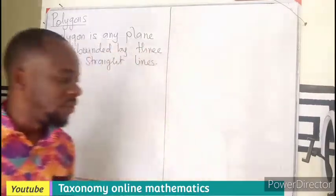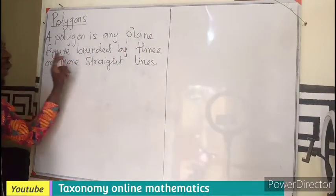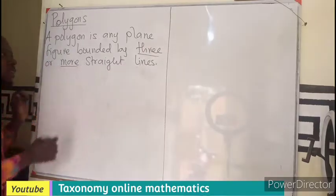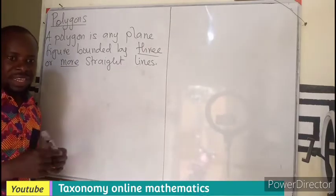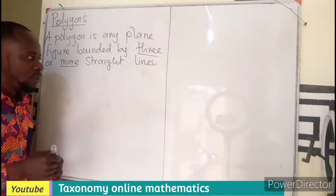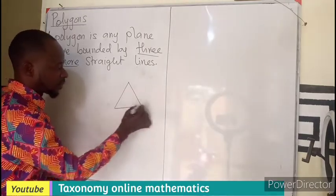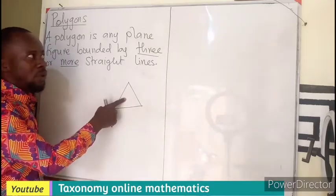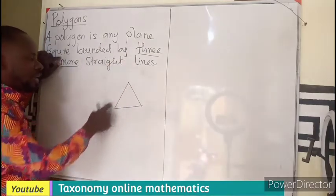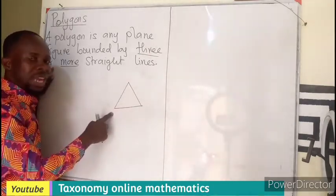Per a brief definition, a polygon is just any plane figure which is bounded by three or more straight lines. The lines that bound the shape should be straight lines. This is a triangle and it is a polygon because it is bounded by three straight lines.